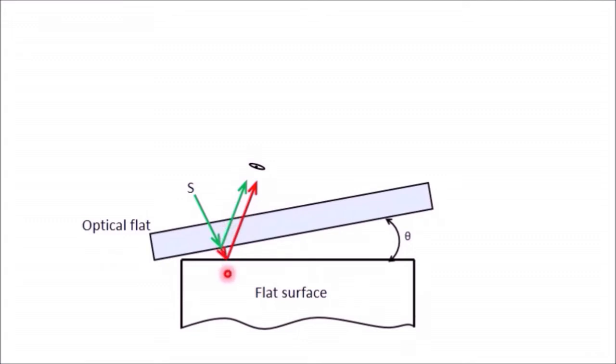If this length ABC is equal to lambda by 2 or any odd multiple of lambda by 2, where lambda is the wavelength of monochromatic light, then a complete destructive interference will occur and the eye can see a distinct patch of darkness termed as a fringe.